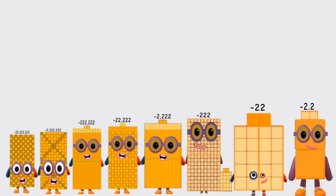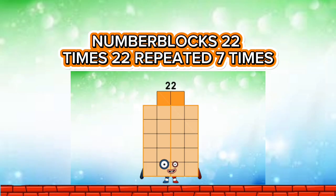Negative to 0.2. Number blocks: 20 times 20 — repeat it 7 times.